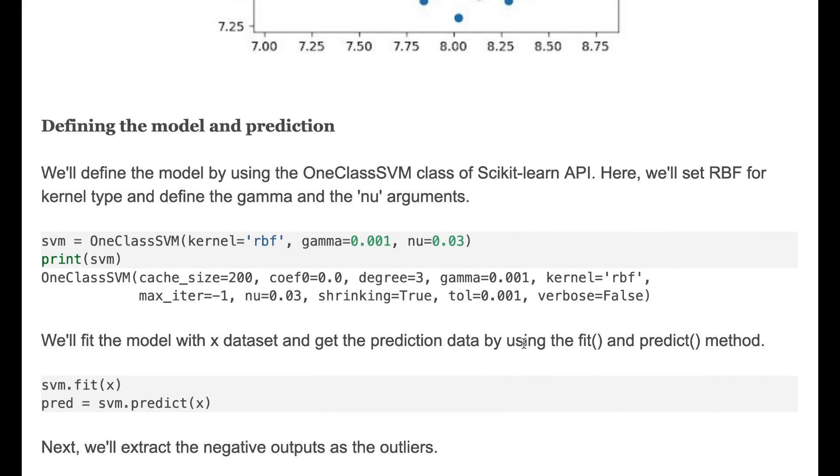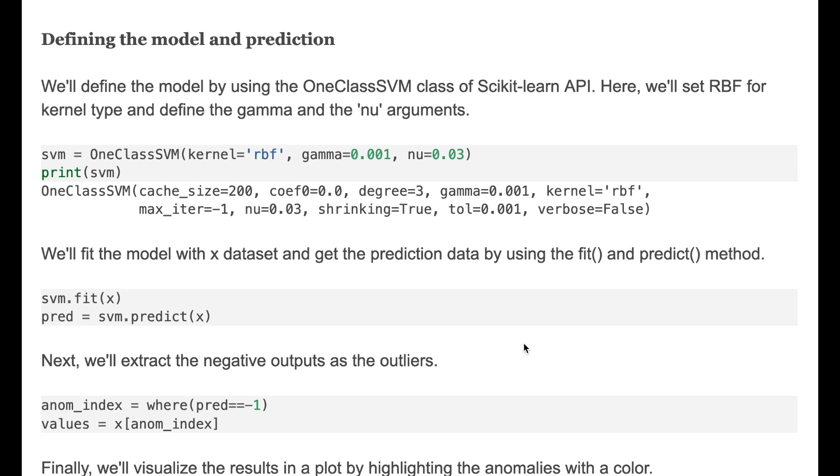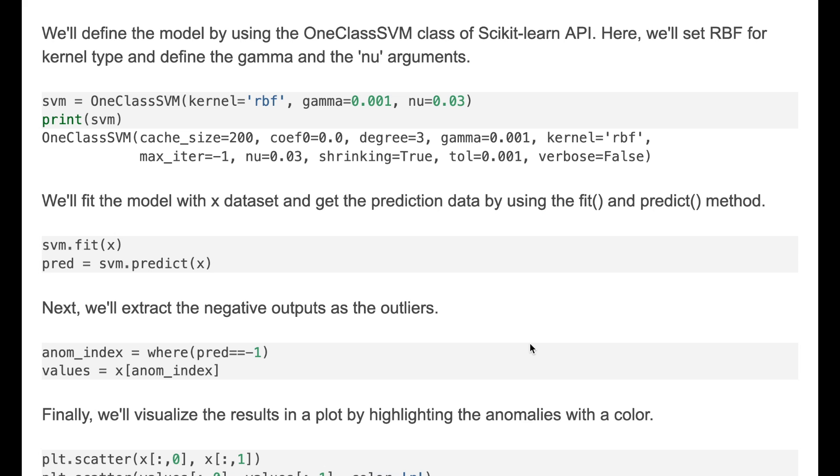Next we'll define the model and do prediction. We'll define the model by using OneClassSVM class of scikit-learn API. Here we'll set RBF for kernel type and define the gamma and nu arguments as shown here. Next we'll fit the model on X data and get the prediction by using the fit and predict methods.